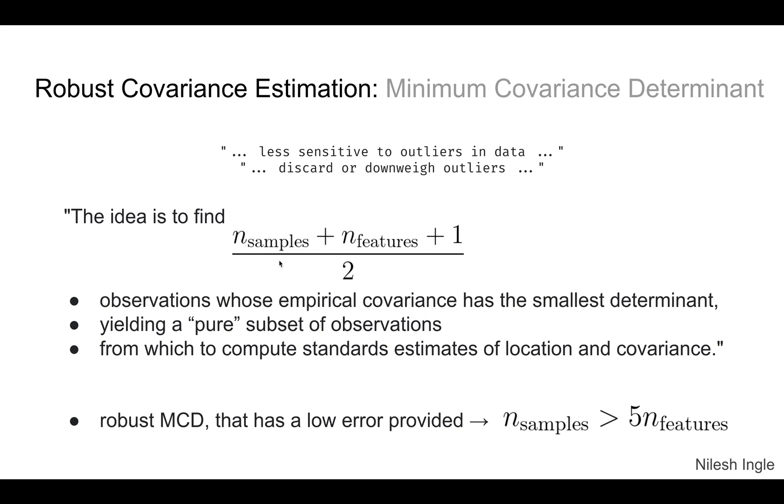The way it is done is the number of observations are found by this particular relation: n_samples plus n_features plus one divided by two. Then the empirical covariance is calculated for those and whichever has the smallest determinant are considered to yield the pure subset of observations and then those are used to compute the standard estimates of location and variance. For this minimum covariance determinant to work, the number of samples has to be greater than five times the number of features.